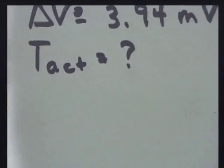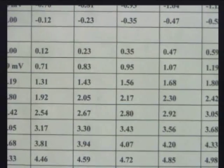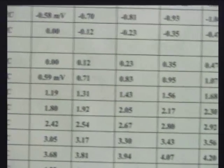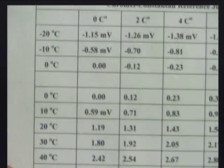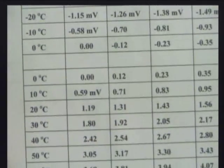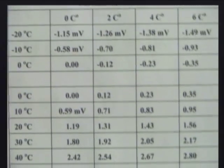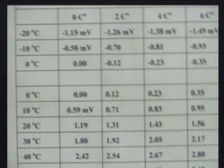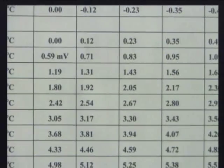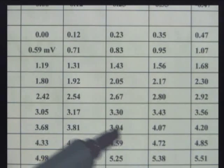I've got 3.94 millivolts. So I look on this chart under millivolts. On the vertical axis on the left, I've got temperature in tens of degrees. Up above, I've got them in two degree increments. So I'm going to look down here in the positive and find 3.94. I made it easy this time. There it is, 3.94 millivolts.